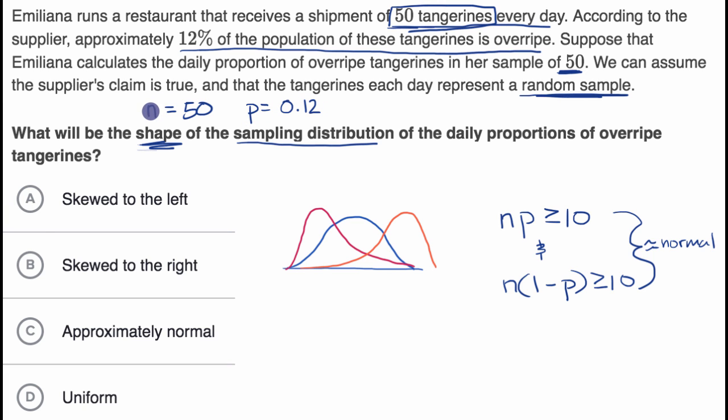So if we take n times p, what do we get? n*p is equal to 50 times 0.12. Well, 100 times this would be 12, so 50 times this is going to be equal to 6. And this is less than or equal to 10. So this immediately violates this first condition, and so we know that we're not going to be dealing with a normal distribution.